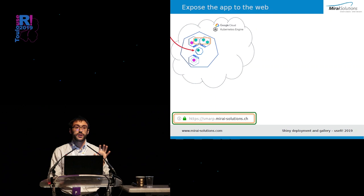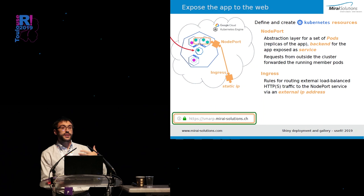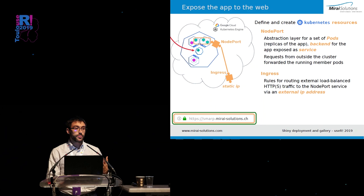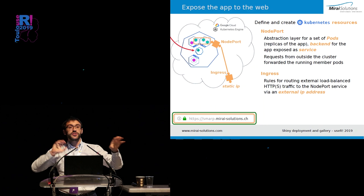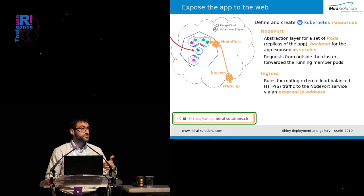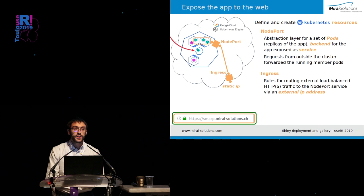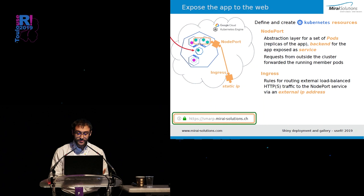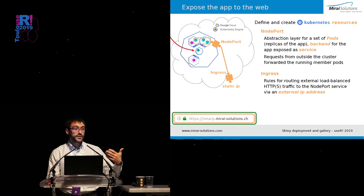In Kubernetes, you do this mainly by defining two resources: one is a node port, and the other is an ingress. A node port allows you to define a service backend for your app, abstracting from the way Kubernetes spins off pods and runs the app in different replicas across different nodes of the cluster. A node port takes external requests and forwards them on a given port to the running nodes available at that time. Besides this, we need an ingress, which makes the app accessible to an external public IP address and takes care of routing HTTPS traffic to the actual service backend.